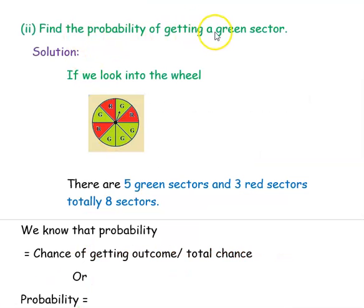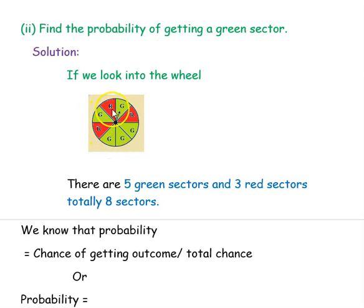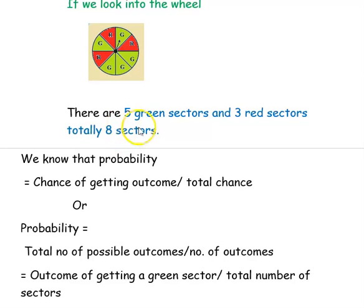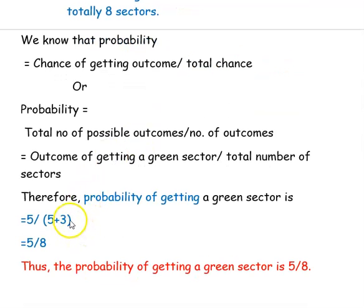Next question: find the probability of getting a green sector. The probability formula is chance of getting the outcome divided by total chance. In this case, chance of getting a green sector divided by total number of sectors. There are 5 green sectors and the total number of sectors is 5 plus 3, which is 8. Therefore the probability of getting a green sector is 5 divided by 8.